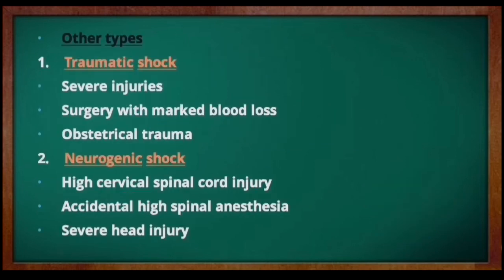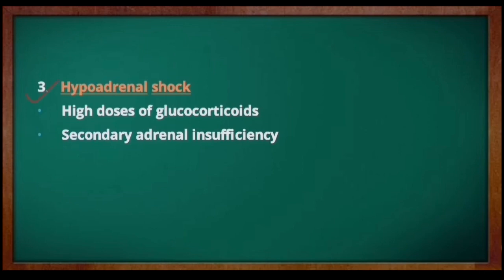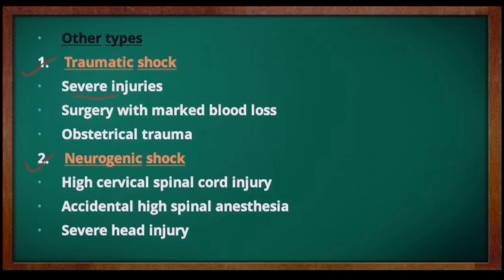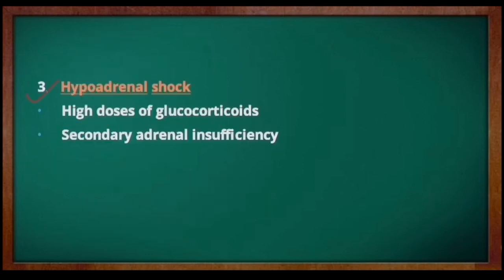Other types of shock include traumatic shock, neurogenic shock, and hypoadrenal shock. Traumatic shock results from severe injuries, surgeries with marked blood loss, or obstetrical trauma. Neurogenic shock can be caused by high cervical spinal cord injuries, accidental high spinal anesthesia, or severe head injury. Hypoadrenal shock results from high doses of glucocorticoids or secondary adrenal insufficiency. Remember these using OTHERS: T for traumatic, H for hypoadrenal, and N (resembling H) for neurogenic shock.